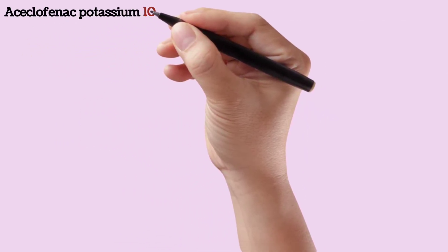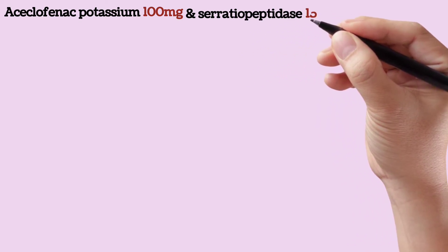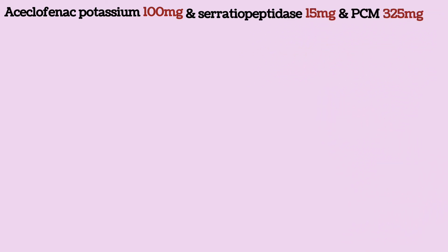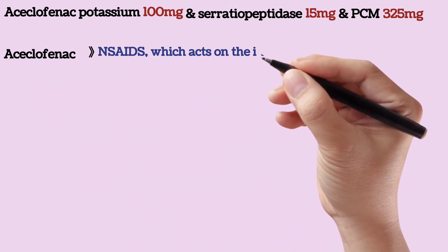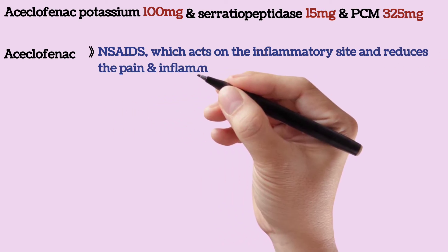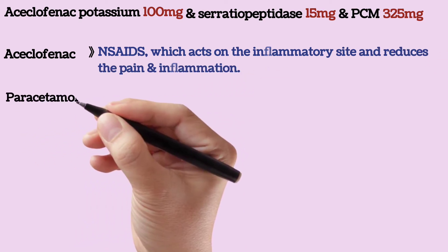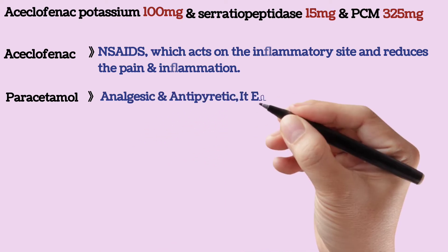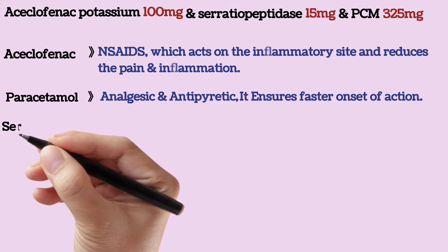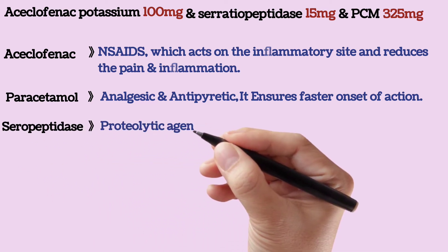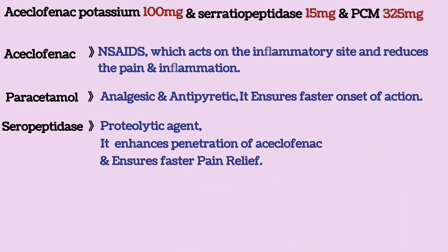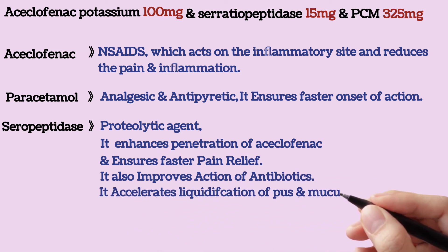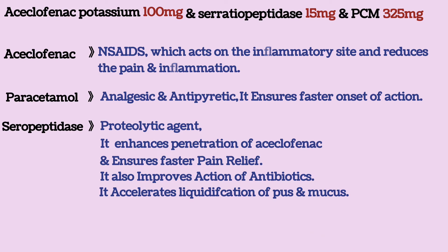Now the combinations of aceclofenac. Aceclofenac potassium, serratiopeptidase, and paracetamol: aceclofenac is a non-steroidal anti-inflammatory drug which acts on the inflammatory site and reduces pain and inflammation. Paracetamol is an analgesic and antipyretic that ensures faster onset of action. Serratiopeptidase is a proteolytic agent that enhances penetration of aceclofenac and ensures faster pain relief. It also improves the action of antibiotics and accelerates liquefication of pus and mucus.